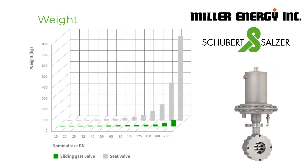The low actuating force and short stroke allow the use of smaller actuators. Combined with the space-saving construction, weight and installation dimensions are minimized, particularly in mid to large nominal sizes. For example, a six-inch globe valve weighs approximately 330 pounds, whereas a sliding gate valve of the same nominal size weighs a mere 33 pounds.